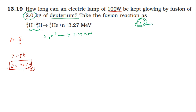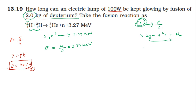The energy release is 3.27 million electron volt. The mass number of deuterium is 2, so from 2 grams of deuterium we get Avogadro's number of deuterium nuclei. In 2 kilogram, that is 2000 grams, the number of deuterium nuclei is Avogadro's number divided by 2, multiplied by 2000.